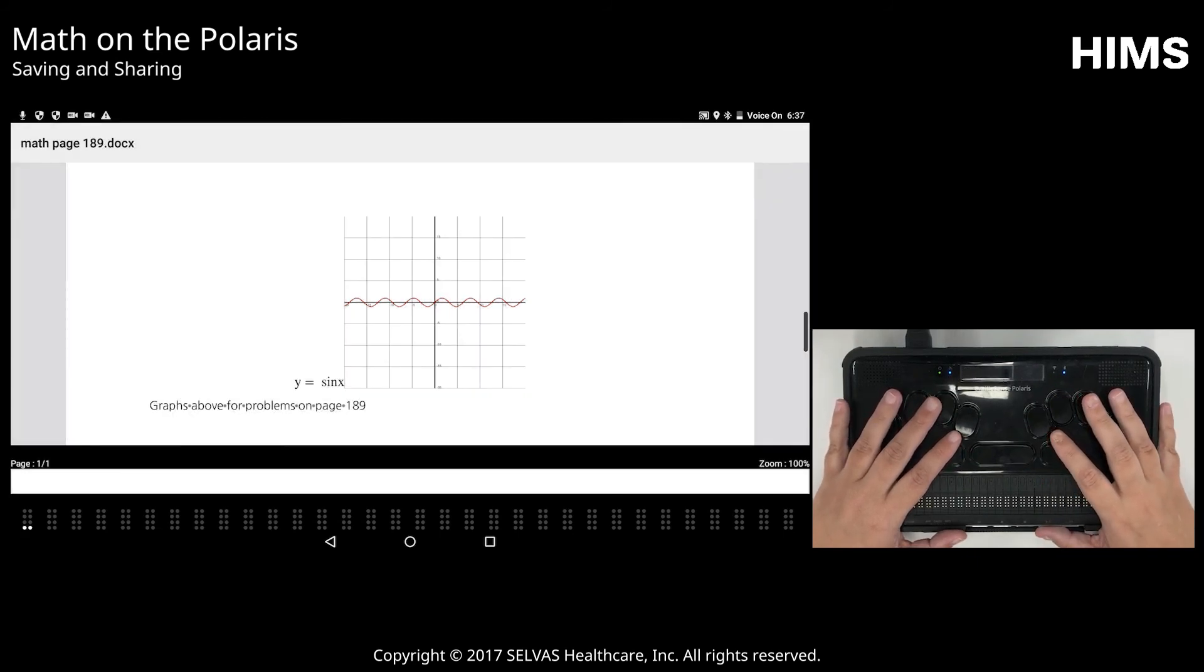So that's all there is to it. Now the student can actually send this document directly via email or to a thumb drive, Dropbox, and it will look just like this. And teachers can also view it via TeamViewer. Right now we're just connected to HDMI. So you can do this several ways. So we hope this gives you a little bit of an introduction to how math works on the Polaris. And again, we will continue to create these tutorials in future. So thanks for watching.